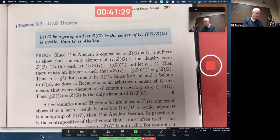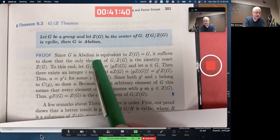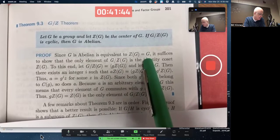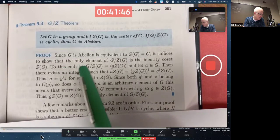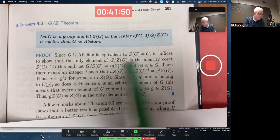That's one example of this. Let's look at its proof. First of all, since G is abelian is equivalent to the center being all of G,